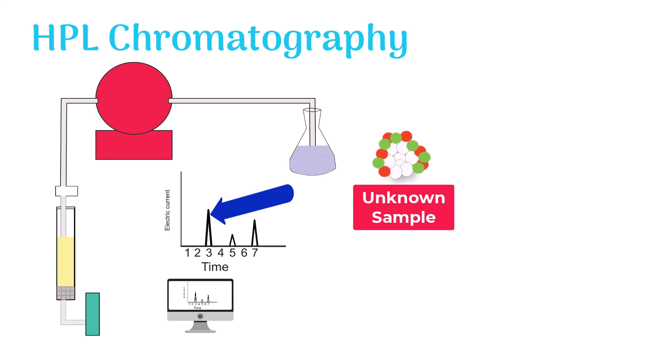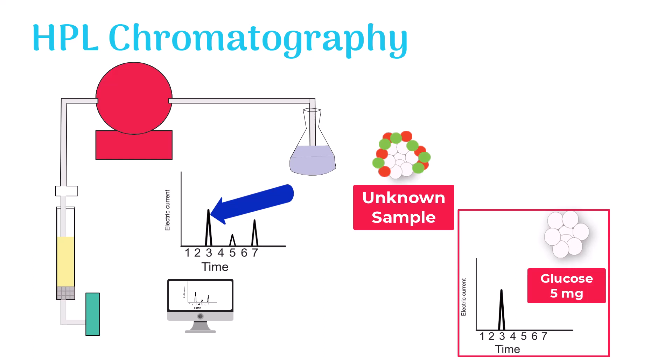Now, let's compare the area of this peak with the area of peak on the chromatogram we obtained a bit earlier. The area of both peaks is the same. This means the amount of glucose components in the unknown sample is 5 mg.